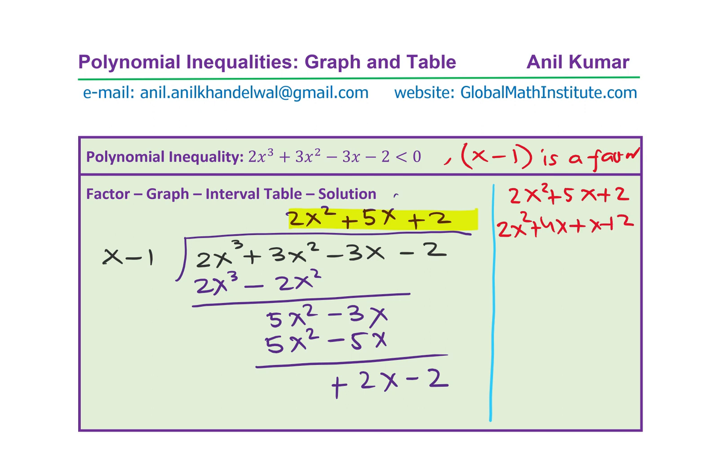And that can be factored. 2x is common, so you get x + 2. And we already have x + 2 here. Taking x + 2 as one factor, we get 2x + 1 as the other factor. Clear?